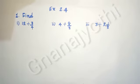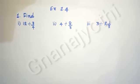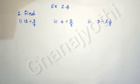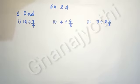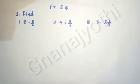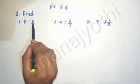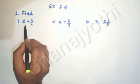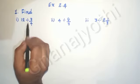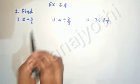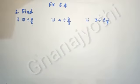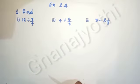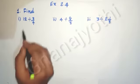Here is the first question: 12 divided by 3/4. The 12 is a whole number — it is not in a fraction. So, if you want to divide or multiply, we will convert everything into a fraction.